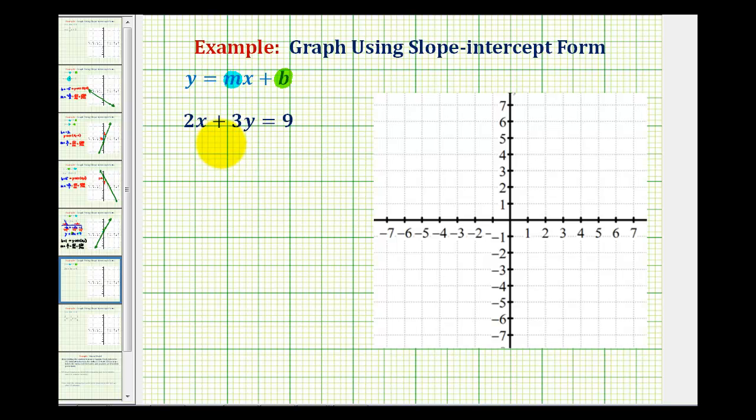The first thing we should recognize in our equation is that we have to solve it for y in order to put it in slope intercept form. So the first step here will be to subtract 2x on both sides of the equation.